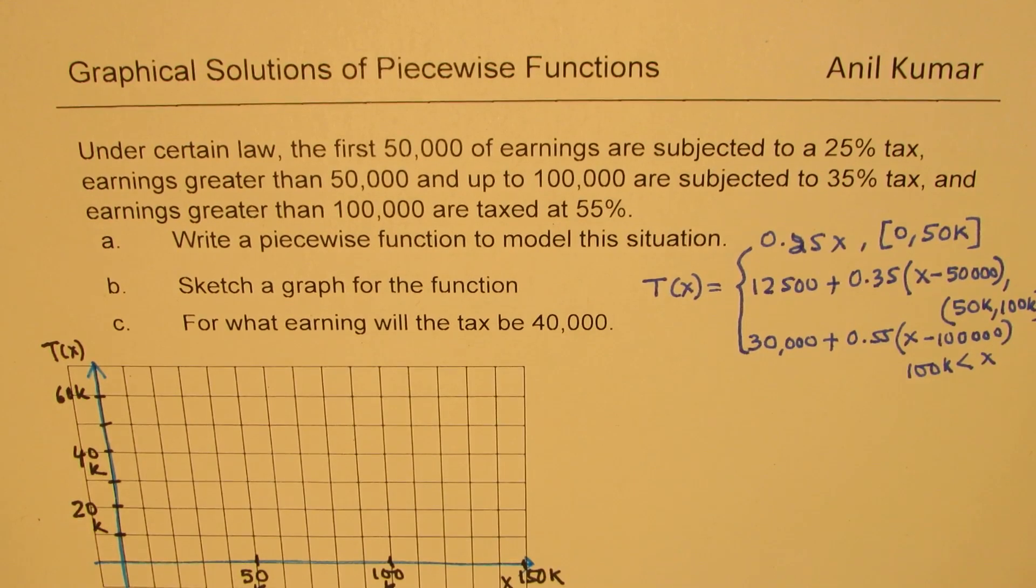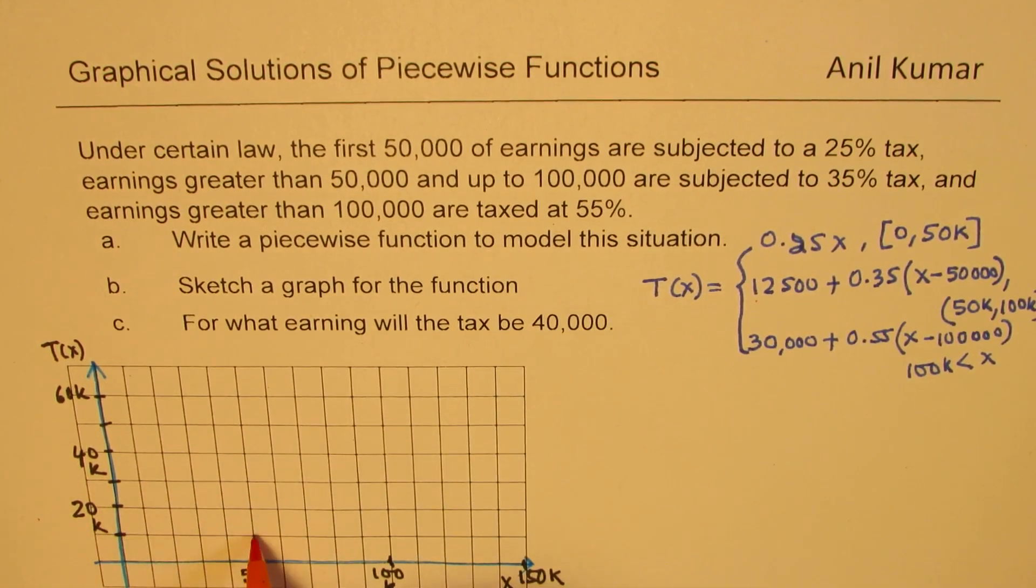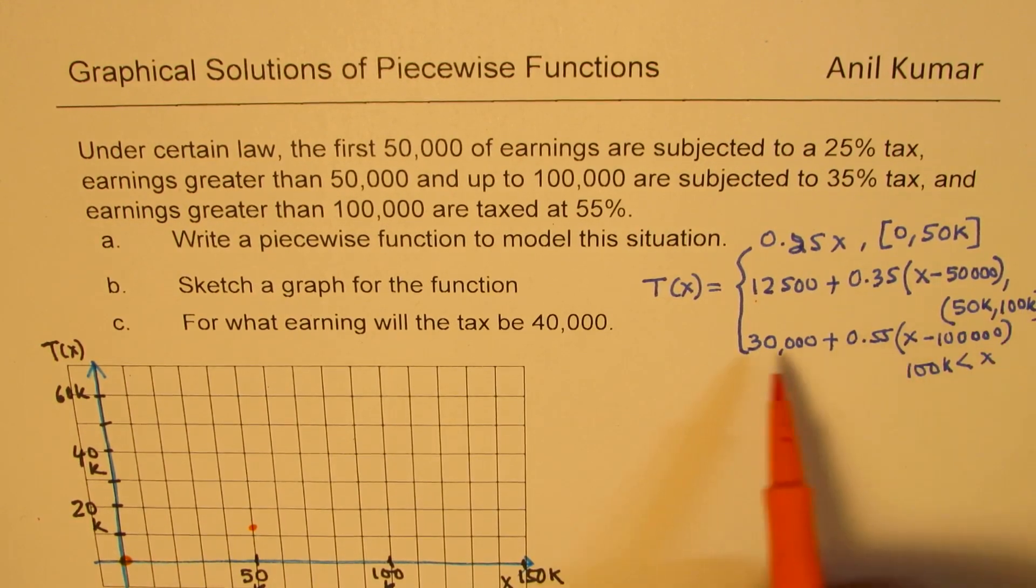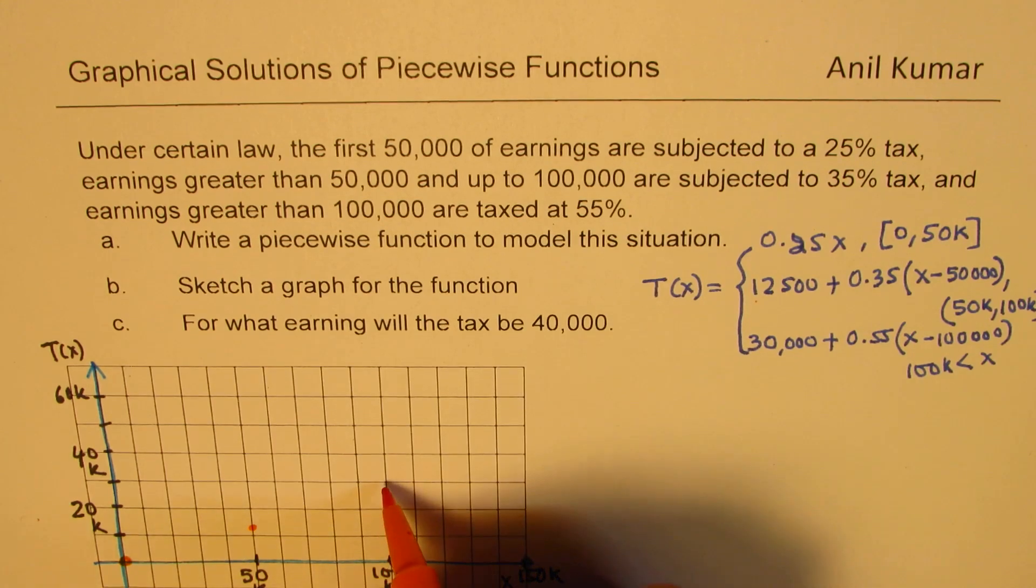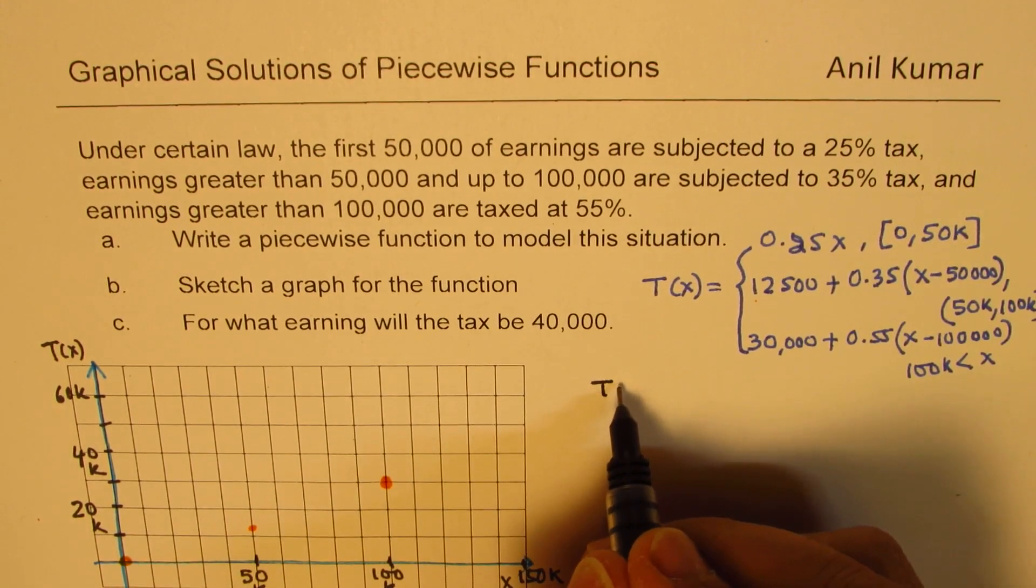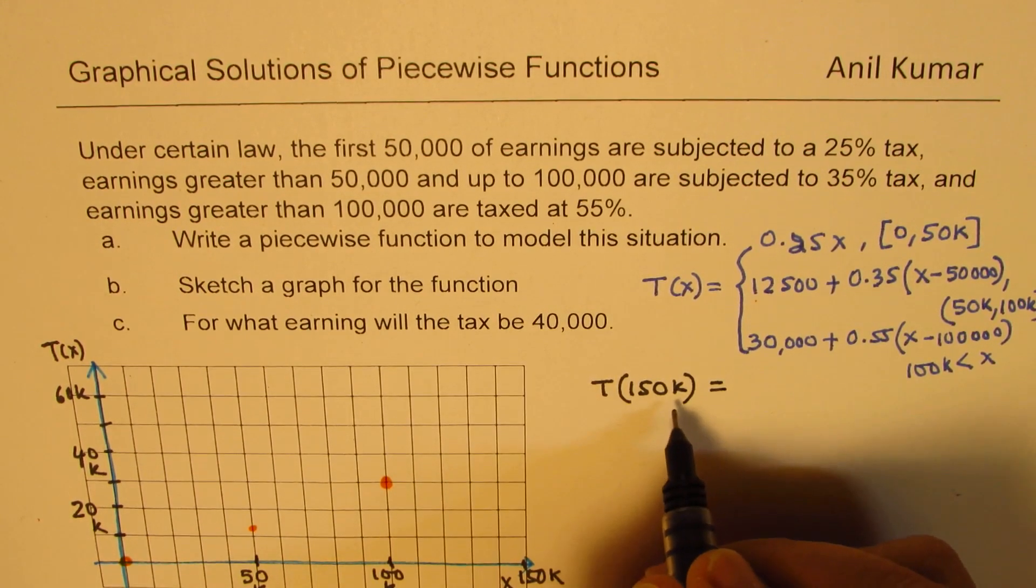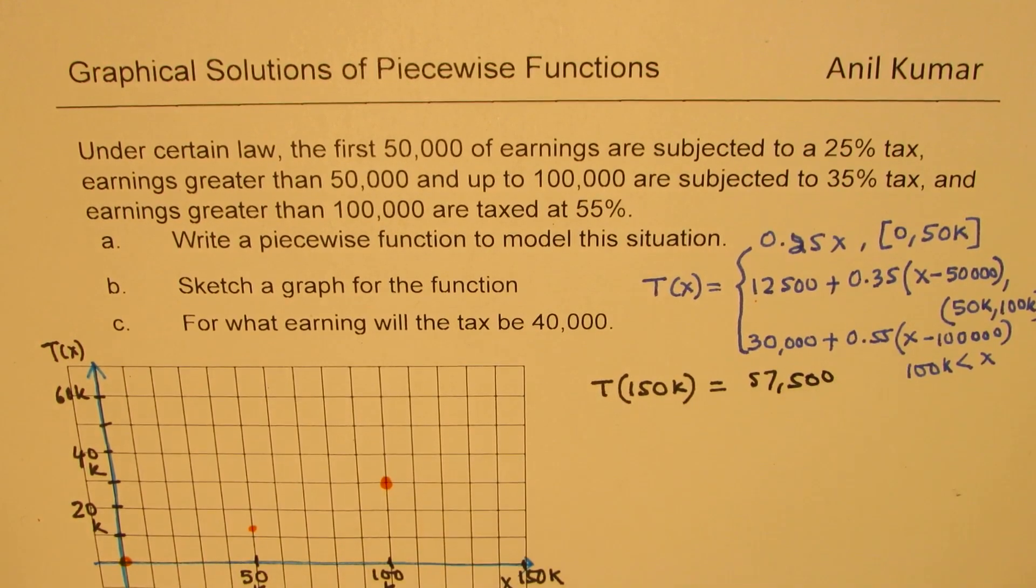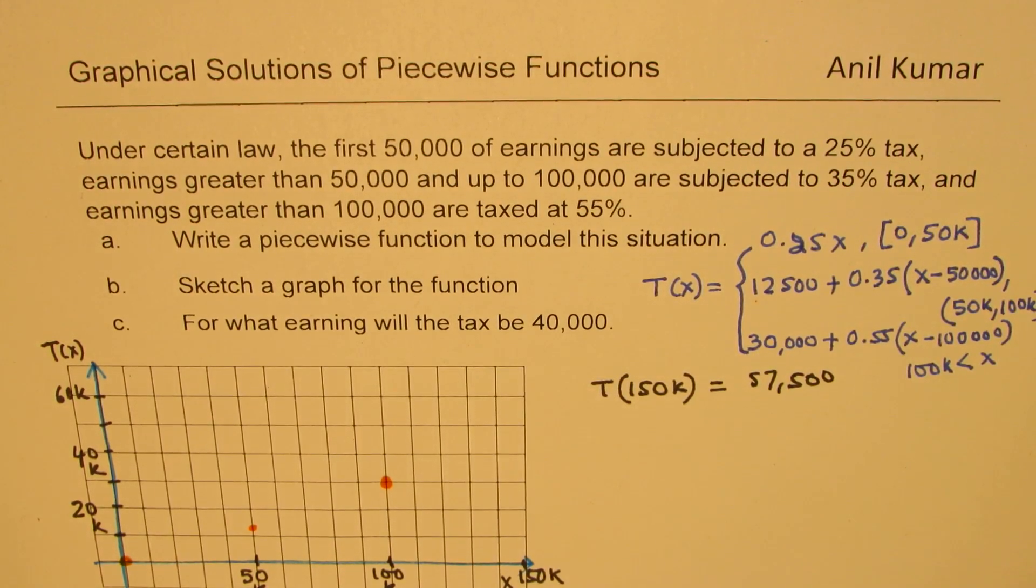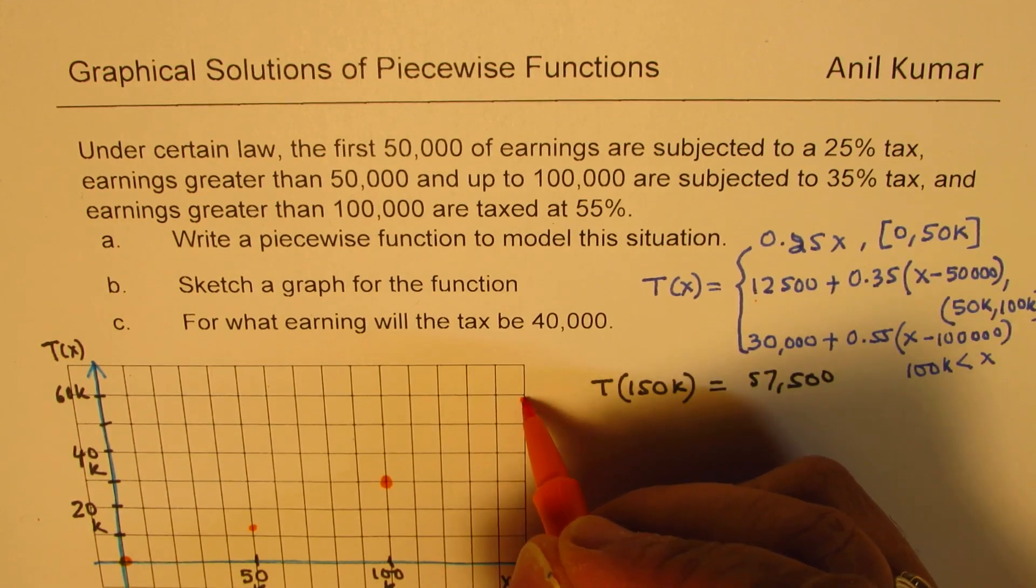Let's plot some points. We know that when the earning is 50,000, the tax is 12,500. For 50,000, it is more than 10. This is 15 and half of that. For 0, it is 0. Then when the earning is 100,000, the tax is 30,000. So for earning of 100, we have a tax rate of 30. We also calculated a value earlier, and that was for 150,000, it was 57,500. So at the earning of 150, 57,500 will be less than 60, more than 50, kind of like this.